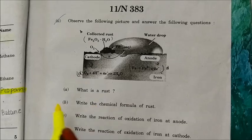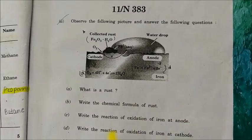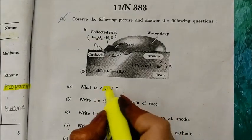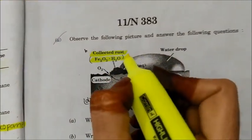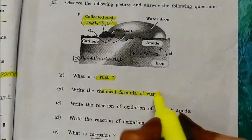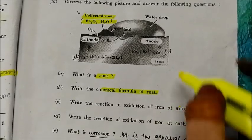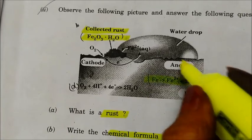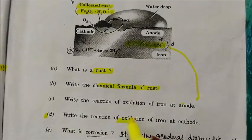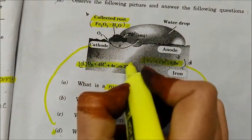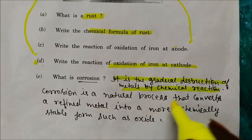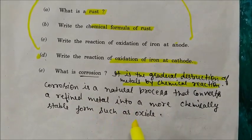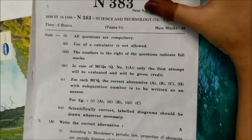Rust is a reddish-brown substance that forms on the surface of iron, caused by the action of air and water. Its chemical formula is Fe₂O₃·H₂O. Write the reaction of oxidation of iron at the anode and at the cathode. Corrosion is the gradual destruction of metals by chemical reaction — a natural process converting refined metal into a more chemically stable form such as an oxide. This completes the Science paper of SSC Board Class 10, Maharashtra State Board. Thank you for watching.